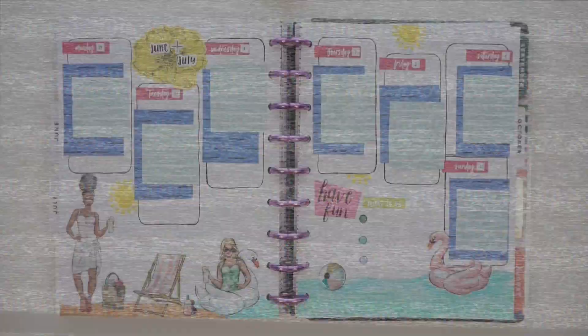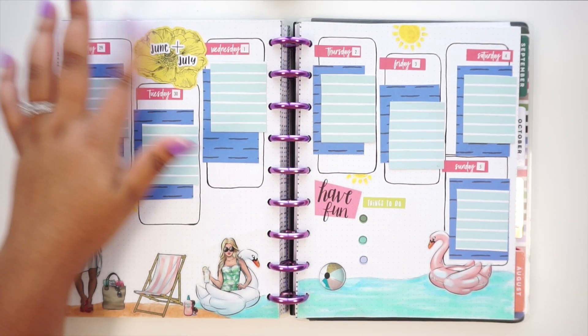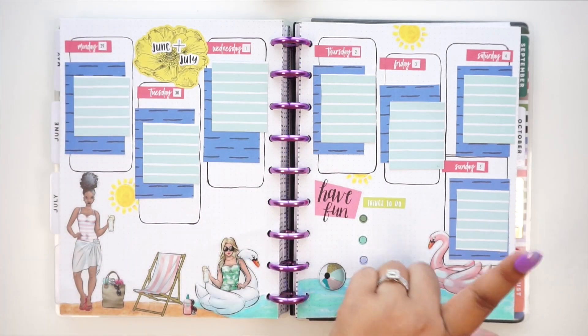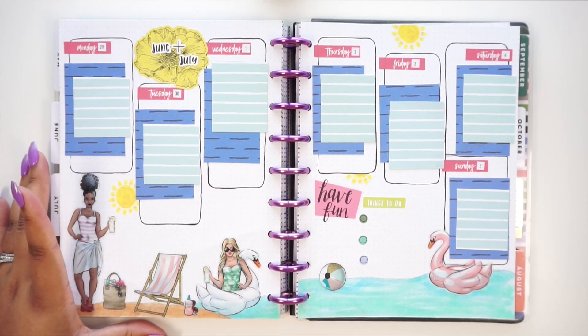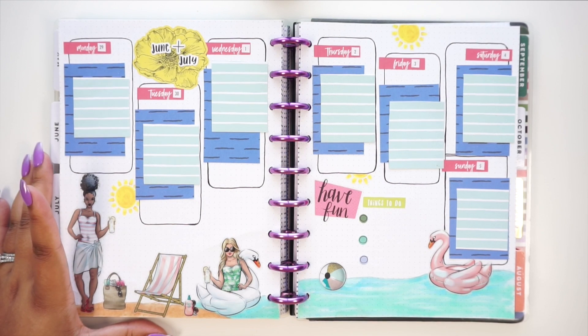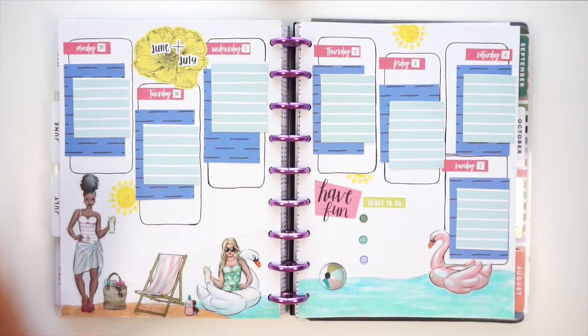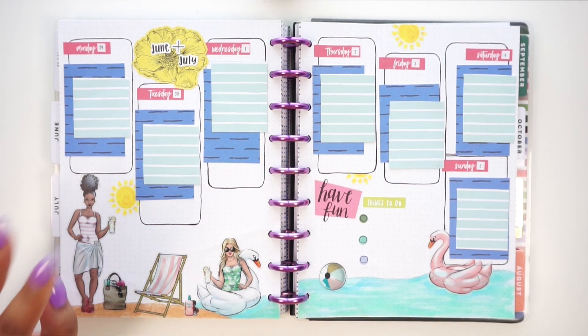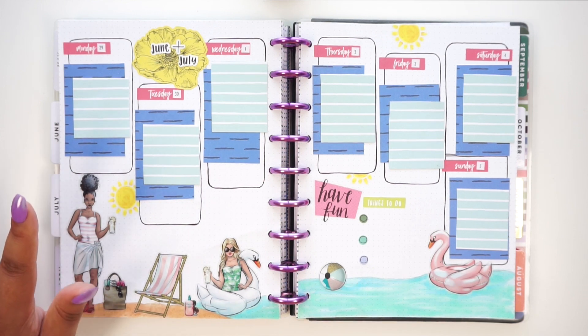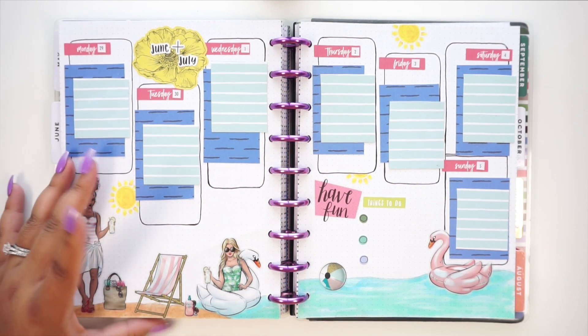All right guys, so here is the final look of my spread for June 29th through July 5th. You guys helped me come up with this spread and I think it turned out really cute. It definitely gives summer vibes. It has more of a beach thing, but you know, beach, summer, it's all the same.